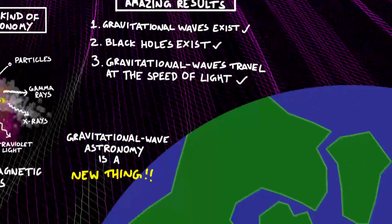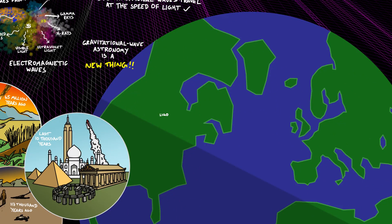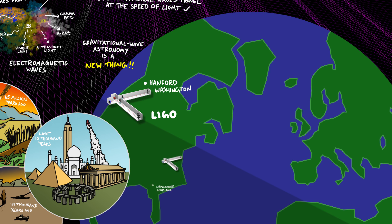Here's how the LIGO detectors work. There are two L-shaped buildings, one in Hanford, Washington, and another in Livingstone, Louisiana, that make up LIGO. And also there's another detector called VIRGO, which is in Italy, near Pisa.